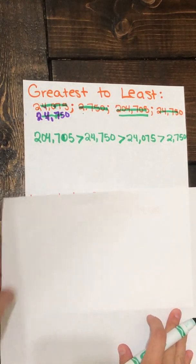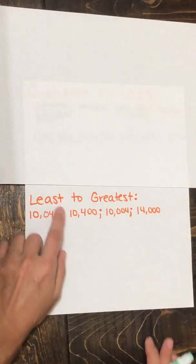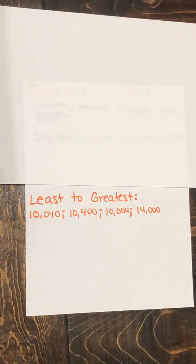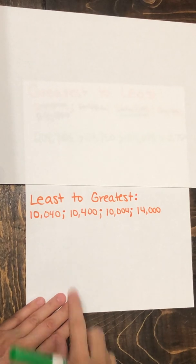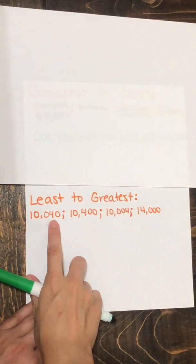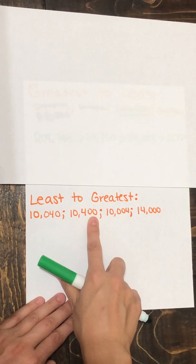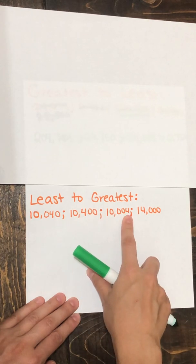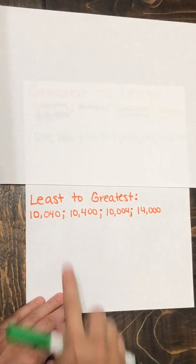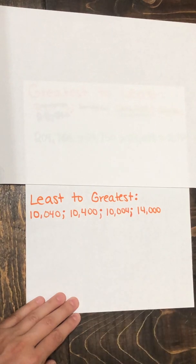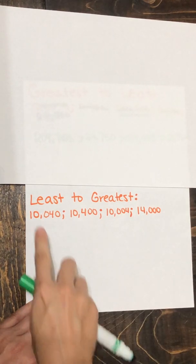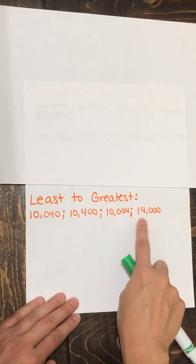Let's look at the second example. This time we're going to do the same thing but we're going to order it from least to greatest. Same process but going the opposite direction. When I see here I have 10,040, 10,400, 10,004, and 14,000. All of these numbers have the same amount of digits and they all go to the 10,000th place.